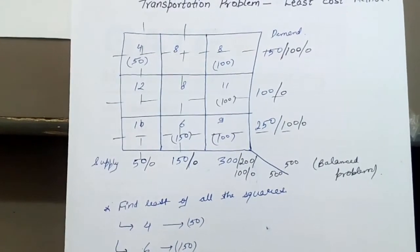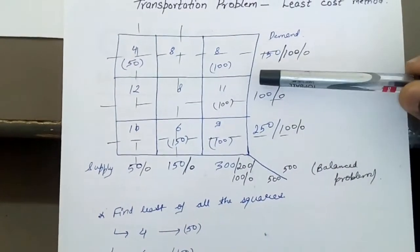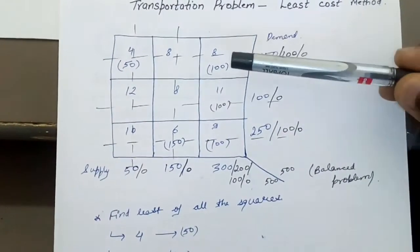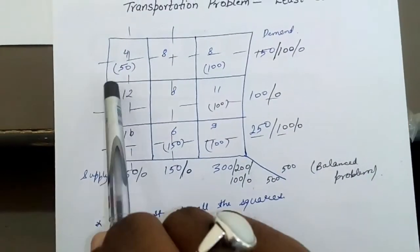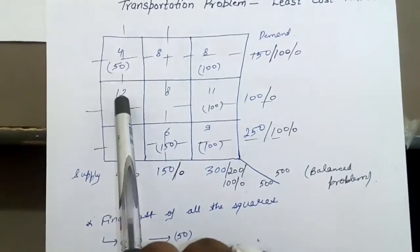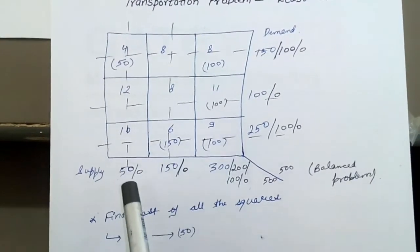Now starting with the problem. This was the transportation matrix and we have to solve by using the least cost method. The matrix was 4, 8, 8, 12, 8, 11, 10, 6, 9. Here supply was 50, 150, 300. Here demand was 150, 100, and 250.